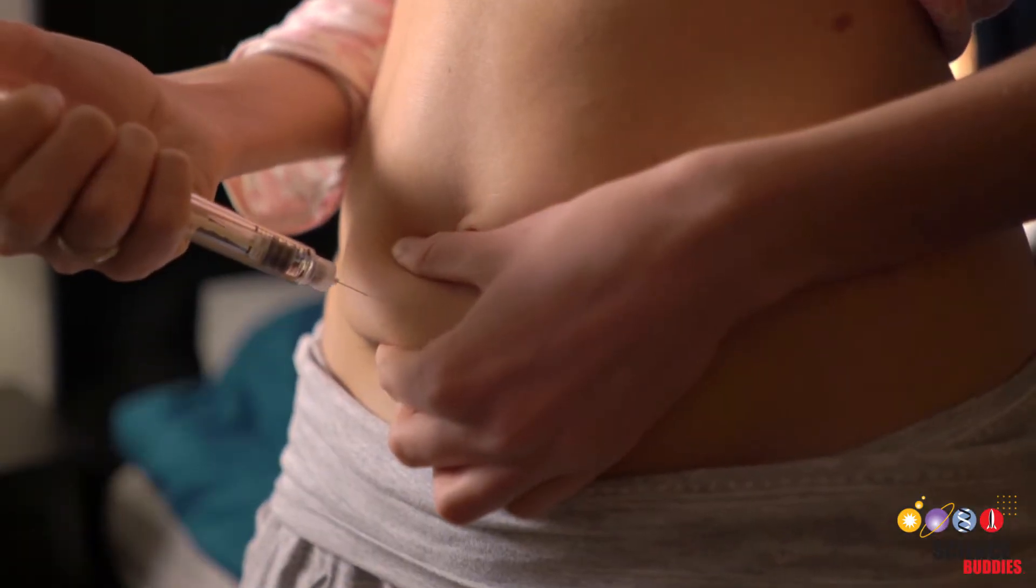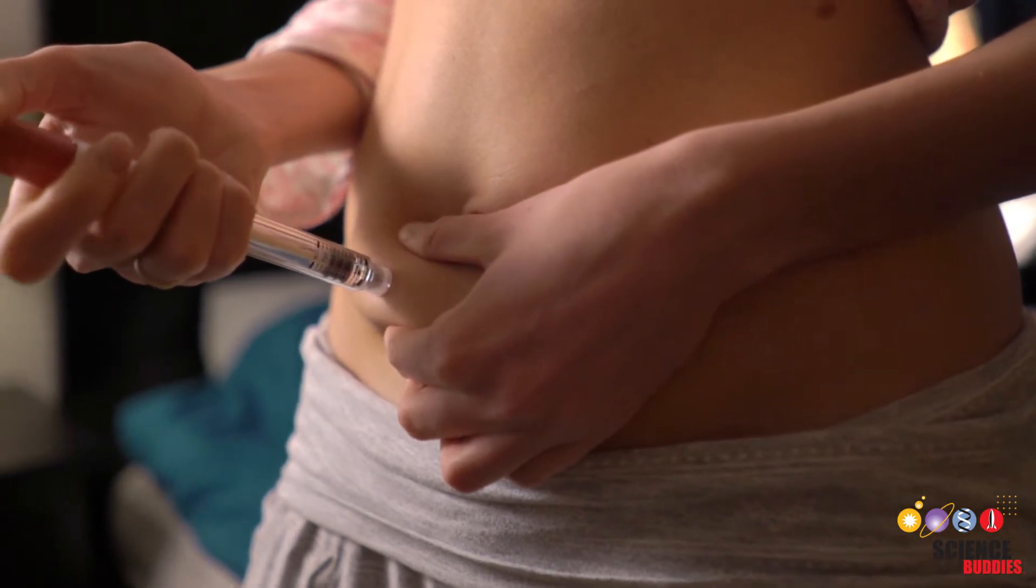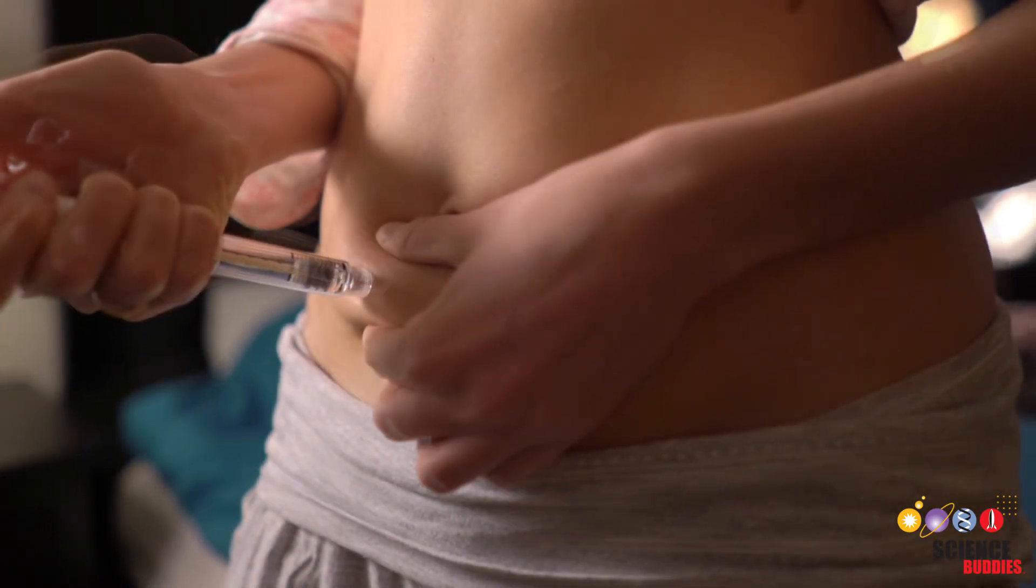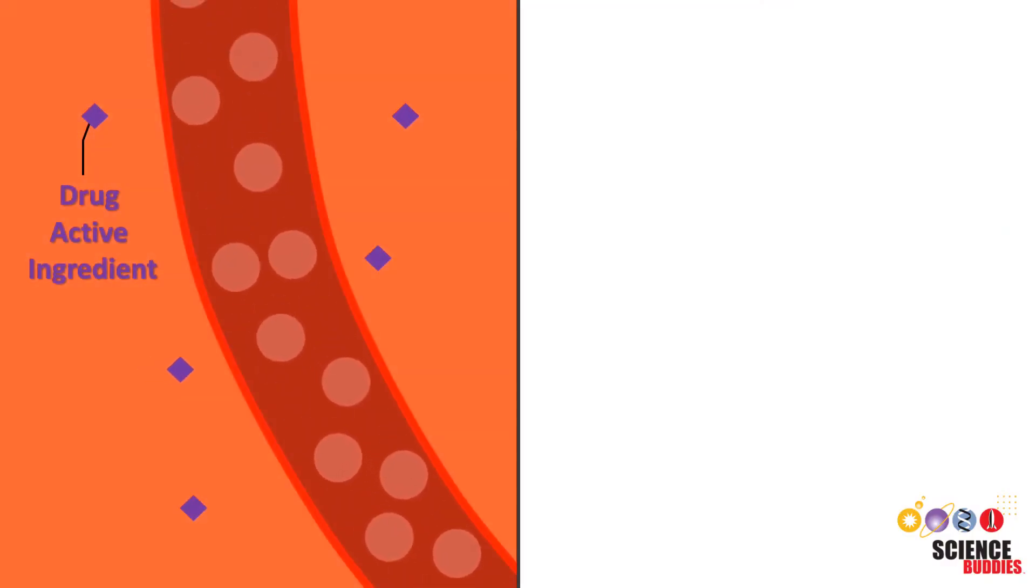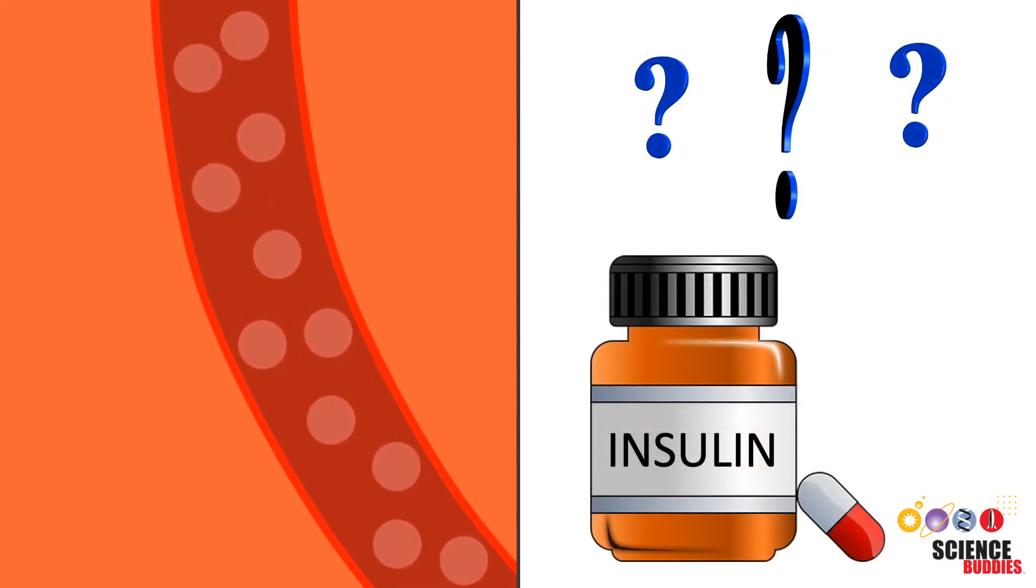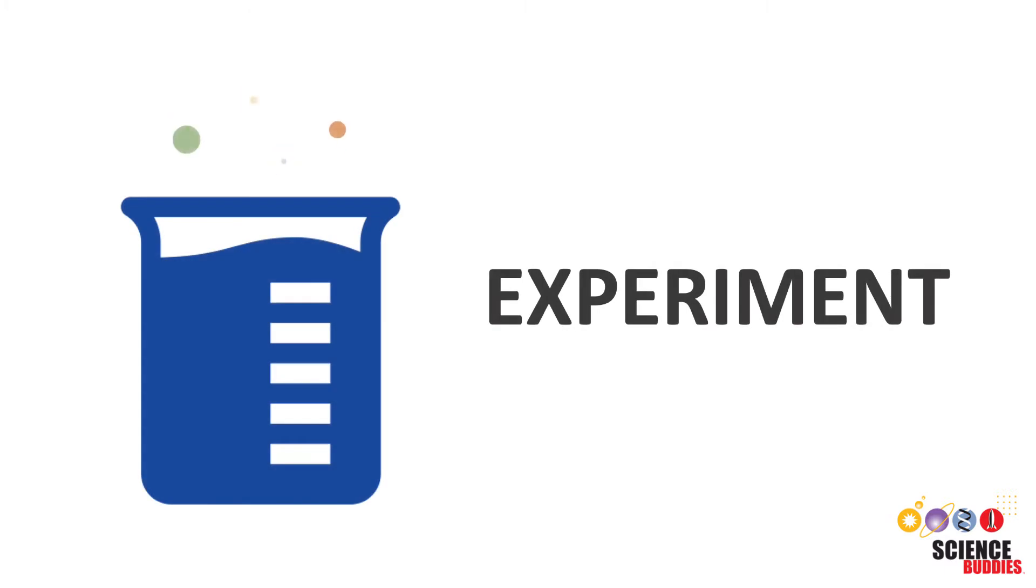Many people with diabetes have to give themselves multiple shots of insulin every day. Wouldn't it be nice if they could just swallow an insulin pill instead? Like injections, oral drugs eventually make their way into the bloodstream. So why isn't there an insulin pill? To answer this question, let's do an experiment.